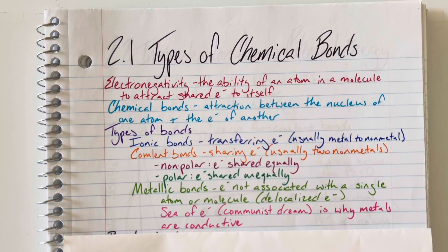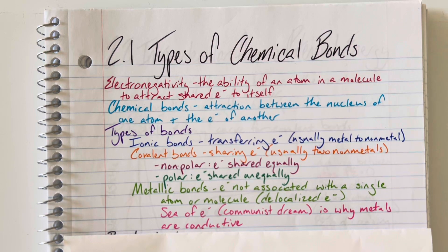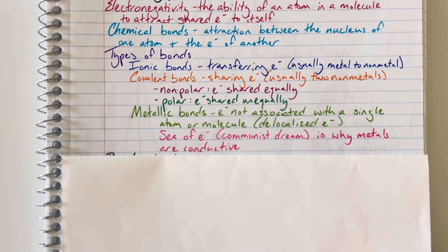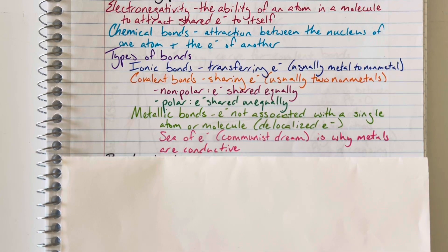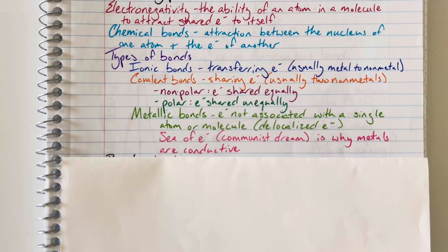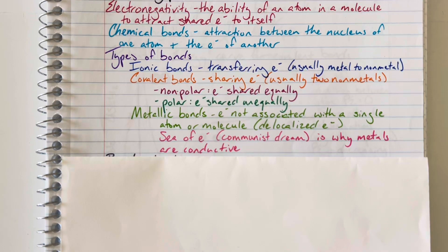I like to liken this to the communist dream, where everybody gets equal access to the electrons. They get exactly what they need, and everybody shares evenly. Nobody takes any more than exactly what they need, and everybody gets equal access. This is why metals are conductive. Because those electrons are delocalized and are shared amongst all of the nuclei of the metals within that substance, electrons are able to flow in one direction or another very easily. That is what conductivity is.